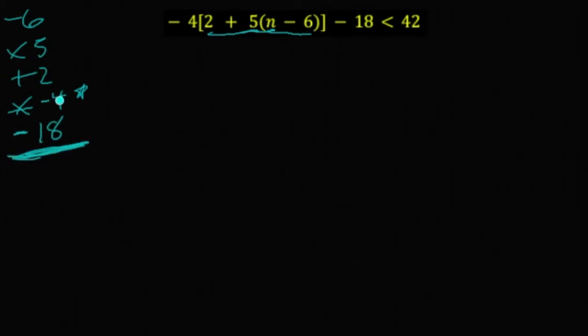Put a star at this multiplication step because if you remember, anytime we multiply or divide by a negative number when we're dealing with inequalities, it's going to cause that inequality symbol to flip around.